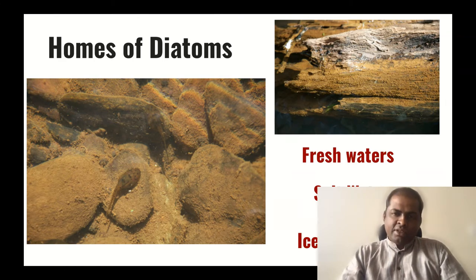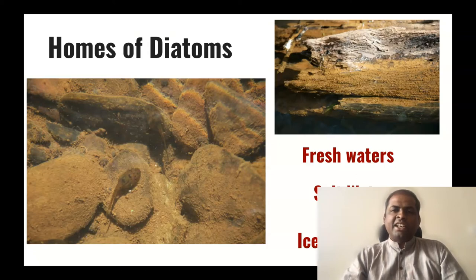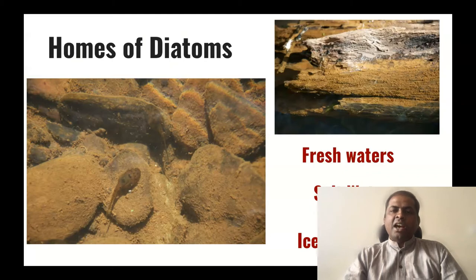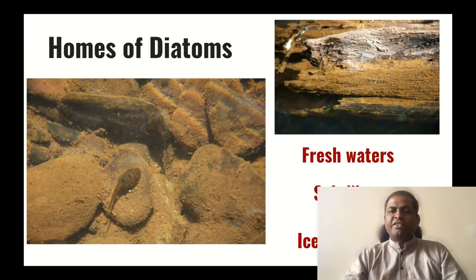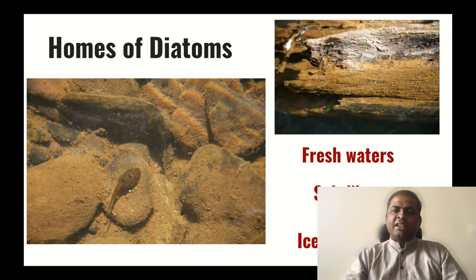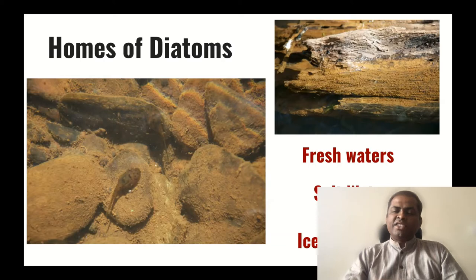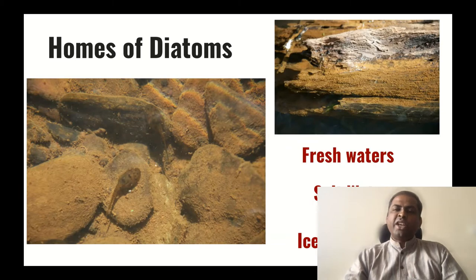Where do diatoms live? Diatoms live in any water bodies, or even where there is a little moisture. They can live in fresh water, salt water up to deep marine environments, in ice, and even in boiling hot springs. They live in a variety of environments, but only particular environments have a particular set of species — organisms living in fresh water cannot live in salt water, and organisms living in cold conditions cannot live in hot conditions. They are very specific to their environment.